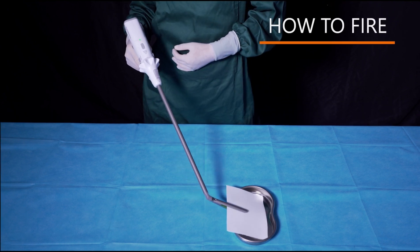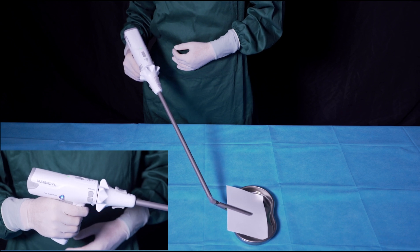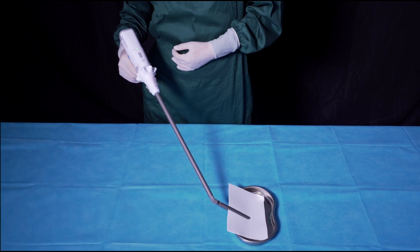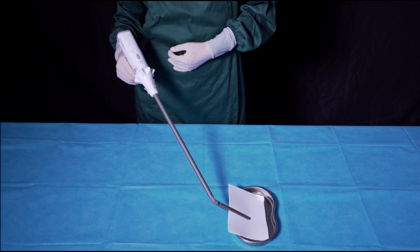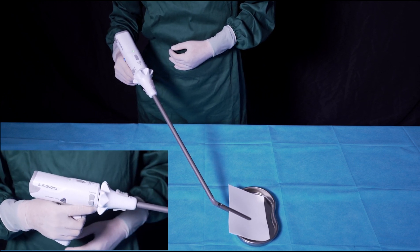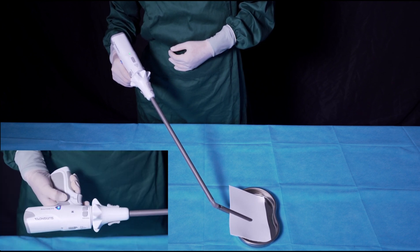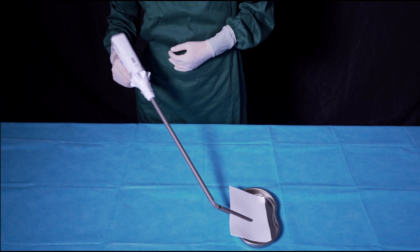After confirming the position of the jaws is correct, long press the close button to close the jaws. After the jaws are fully closed, the insurance button indicator flashes blue. When preparing to fire, press the insurance button left or right to release the insurance to start firing.